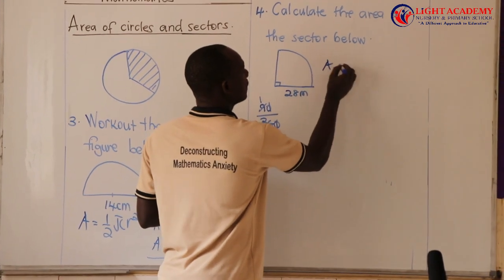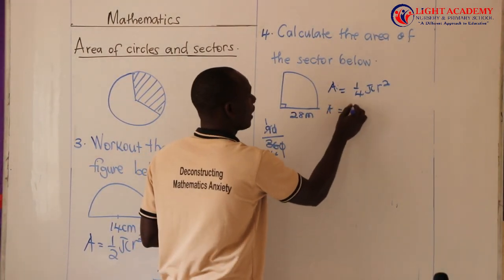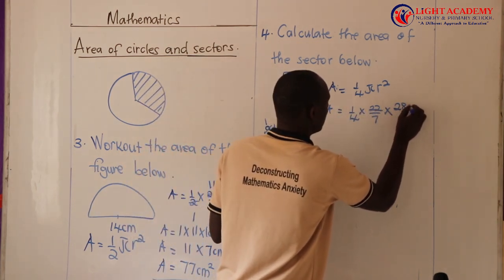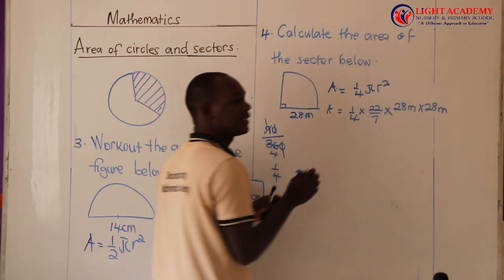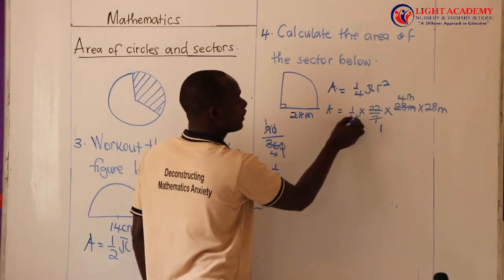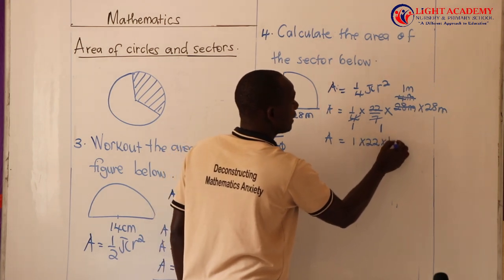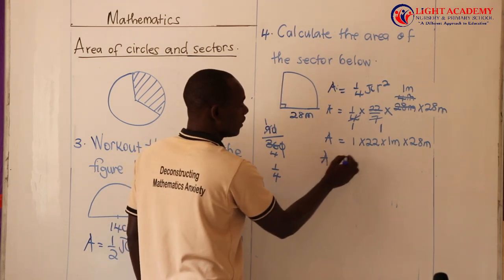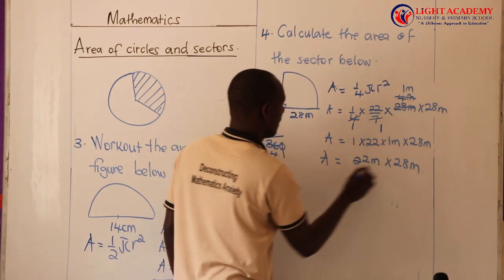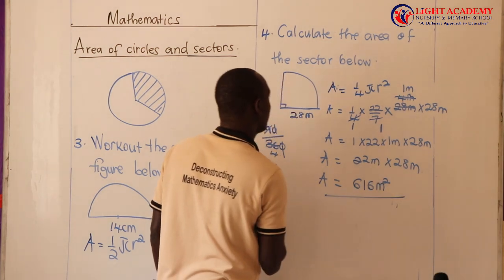So area of a quadrant equals one quarter times pi r squared. Area equals one quarter times 22 over 7 times 28 meters times 28 meters. Reducing: 28 over 7 is 4, and then 4 over 4 is 1, leaving 22 times 1 meter times 28 meters. So area equals 22 times 28, which gives 616 square meters. That is the area of the quadrant — example number 4.